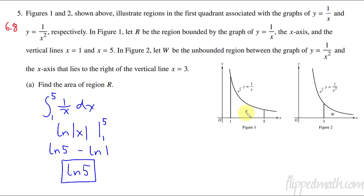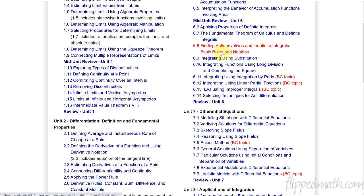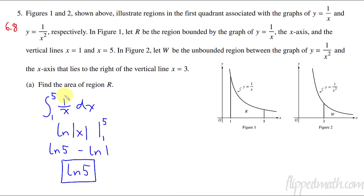This is from lesson 6.8. We learned area under the curve before 6.8, but the reason I say 6.8 is because that's where we go over basic rules and notation for antiderivatives. That includes integrating one over x to get the natural log. Let's go on to part B.